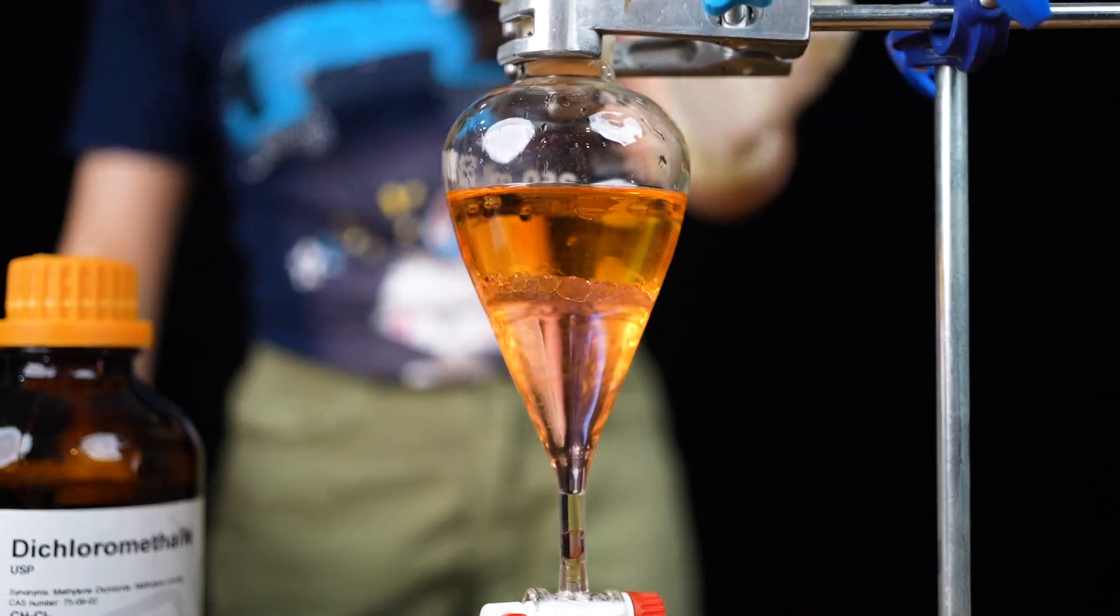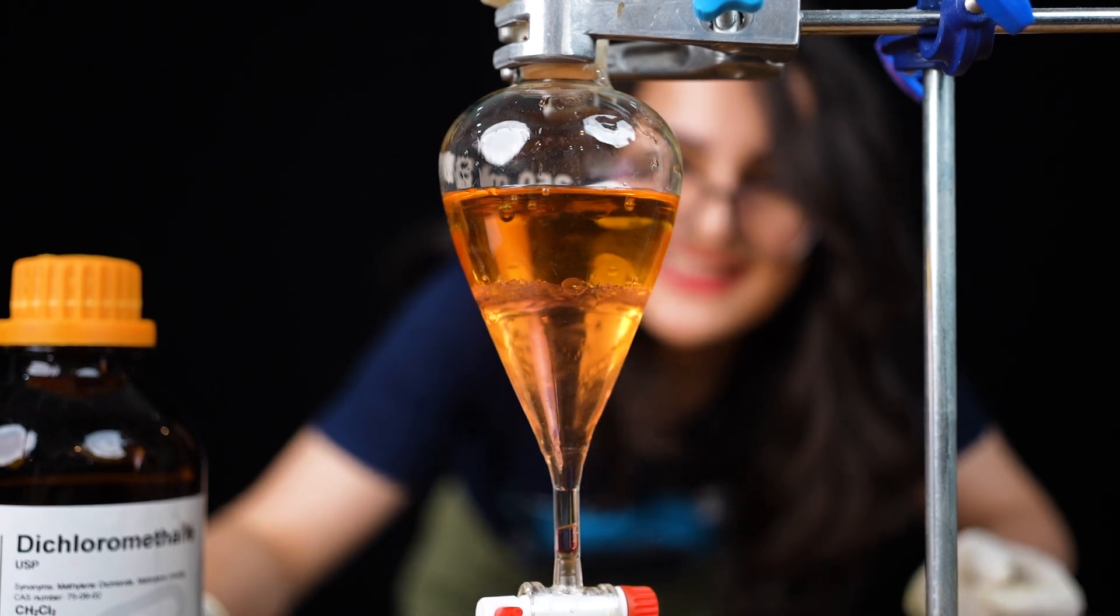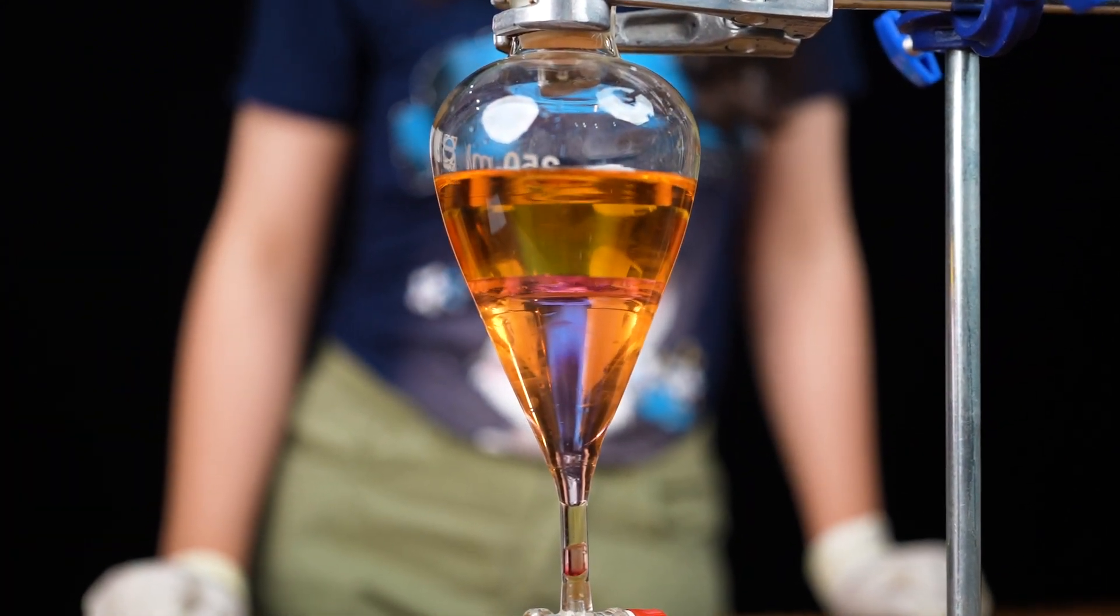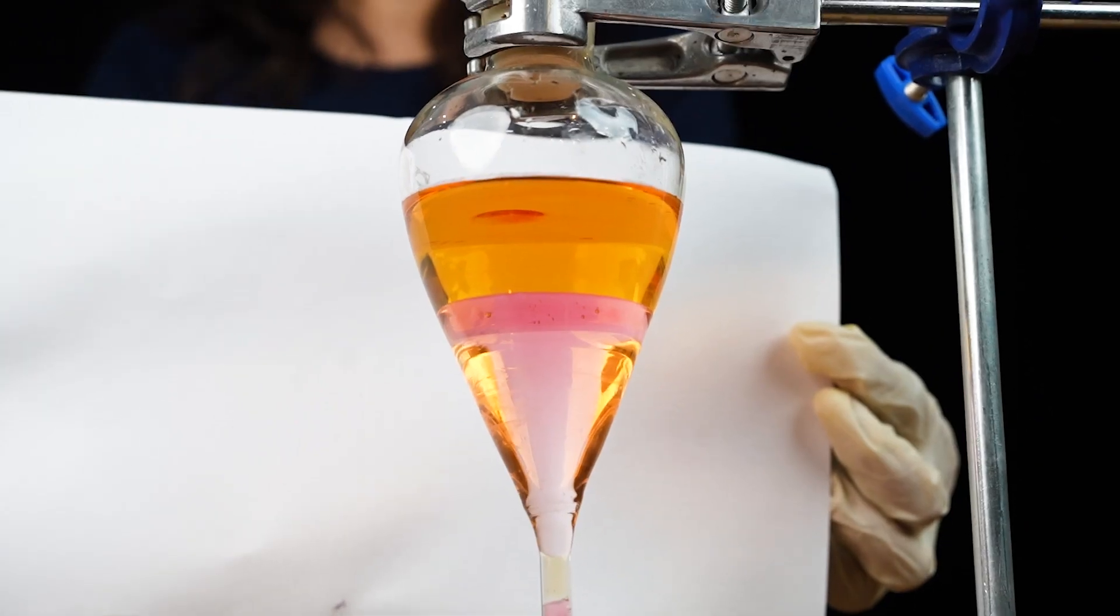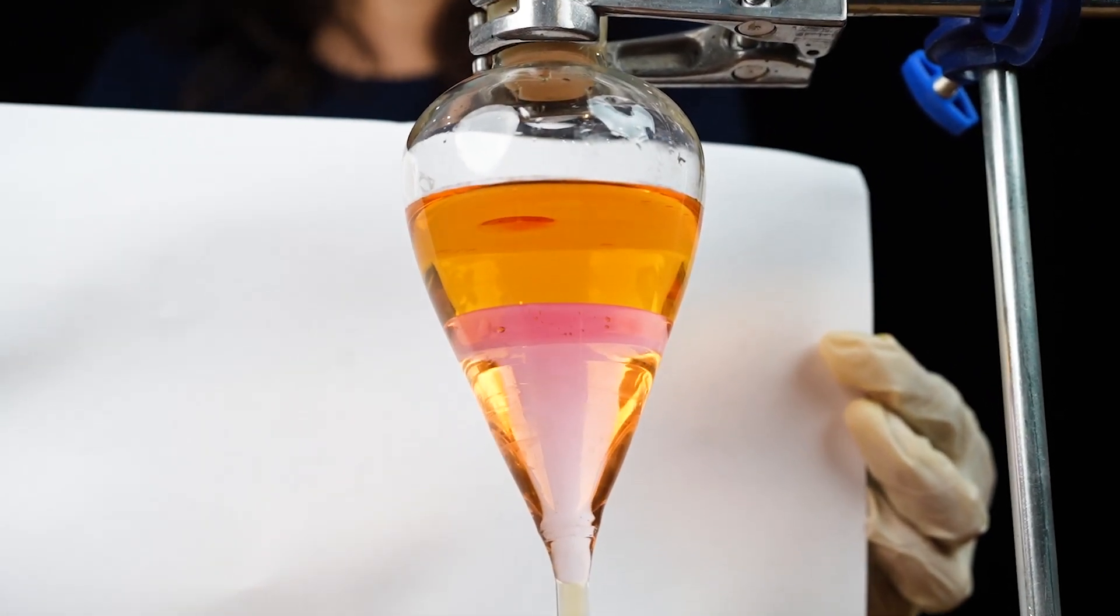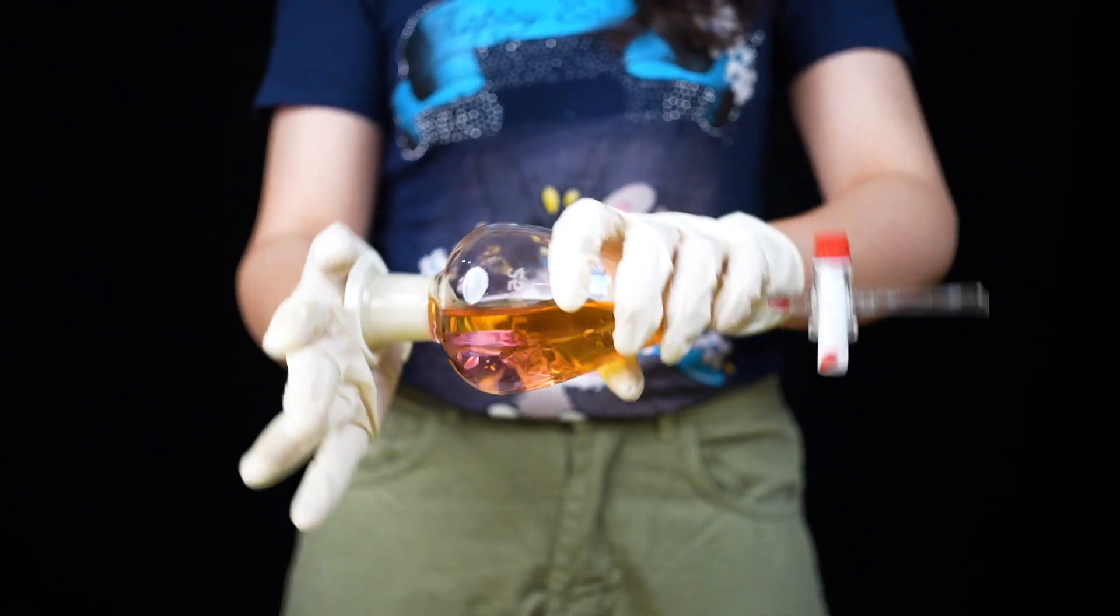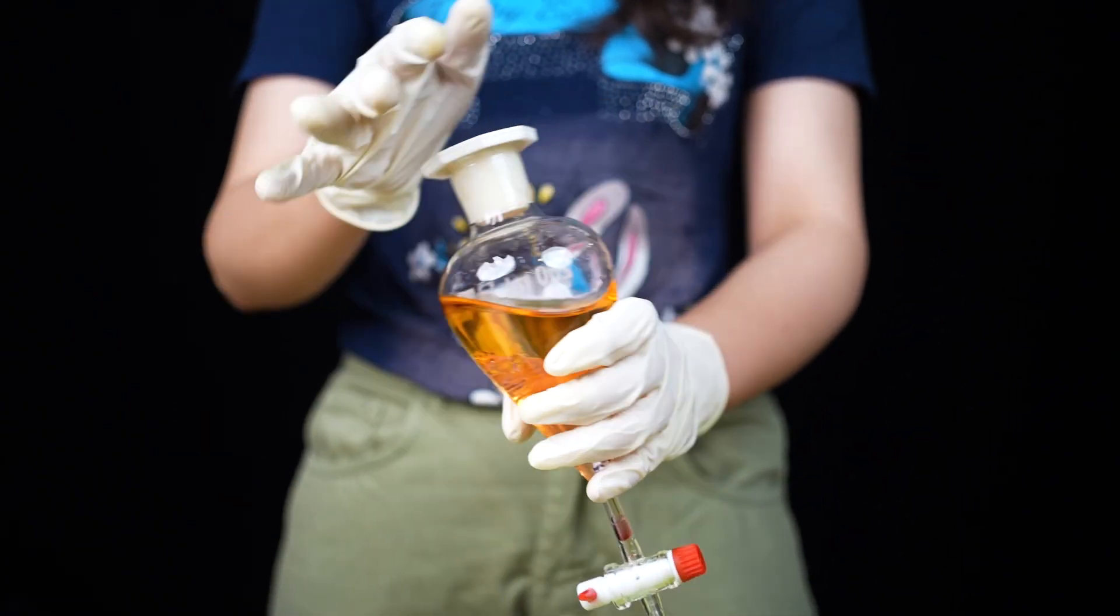At the very beginning, you can see a slightly pinkish color appearing. The pink color in this experiment shows that the iodine has moved from the water layer into the organic layer. Now you can see the forming of two layers, water and the DCM. And of course, water has a lower density, so it stands on top.